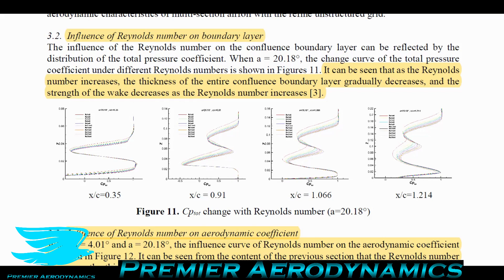First, as the Reynolds number increases the boundary layer thickness decreases. Those familiar with boundary layers know that a laminar boundary layer is significantly different from a turbulent one. In a laminar boundary layer, the velocity close to the wall is still fairly slow — the velocity profile shows a gradual increase away from the wall. In a turbulent boundary layer, the increase is much sharper and more dramatic. With higher Reynolds number the flow is more turbulent, resulting in a thinner boundary layer.